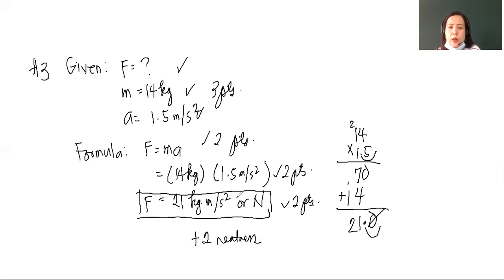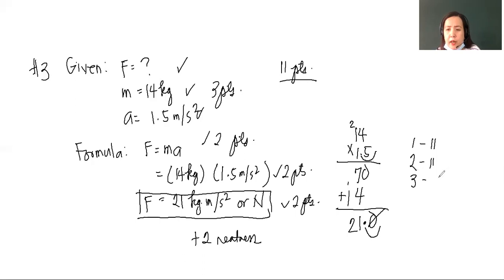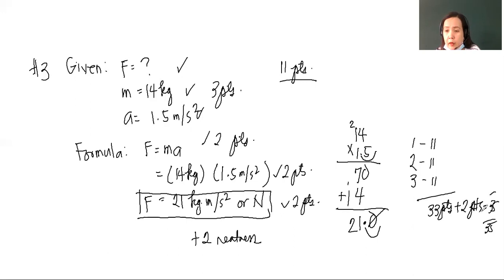Let us get the total score: number one problem 11 points, number two 11 points, number three 11 points, for a total of 33 points. I will give bonus points of 2 to make it 35 over 35. I hope you got the correct answers — thank you very much.